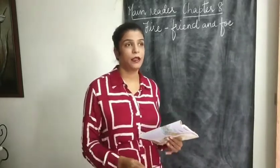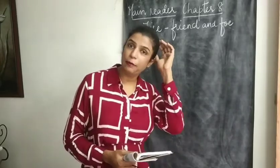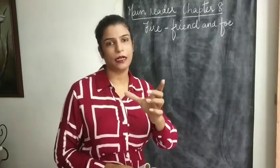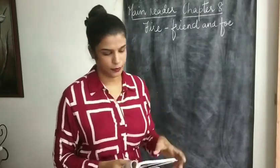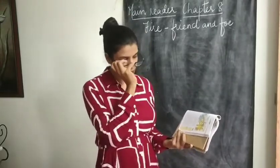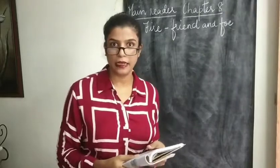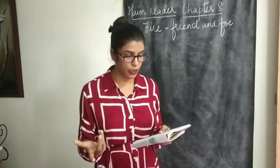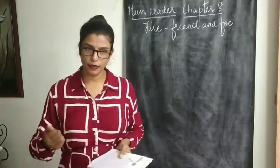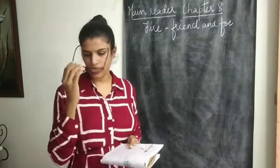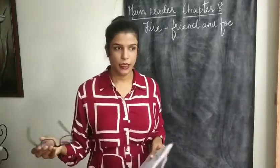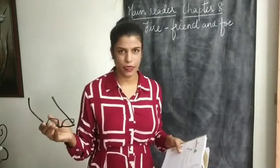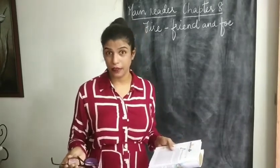Let us see by reading the chapter. I request you to read every part of the textbook as I complete the explanation. So page number 114, we begin with Fire Friend and Foe. Fire is both useful and dangerous. What is fire? How did we discover it? How do we control it? The element which is the opposite of fire is water, so we can sprinkle water — that's the easiest way to put out fire.